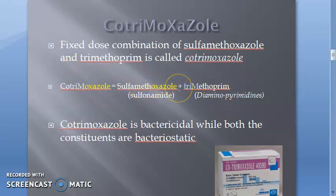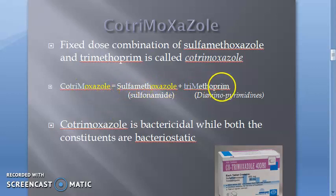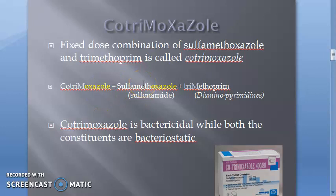Cotrimoxazole is an example of supra-additive synergism. The combination has more effect than the individual effect of sulfamethoxazole and trimethoprim put together. So the combination is more powerful than the individuals added together.